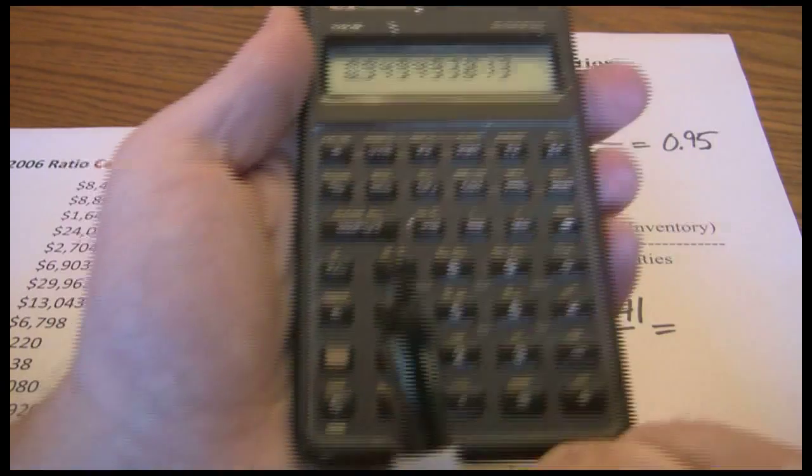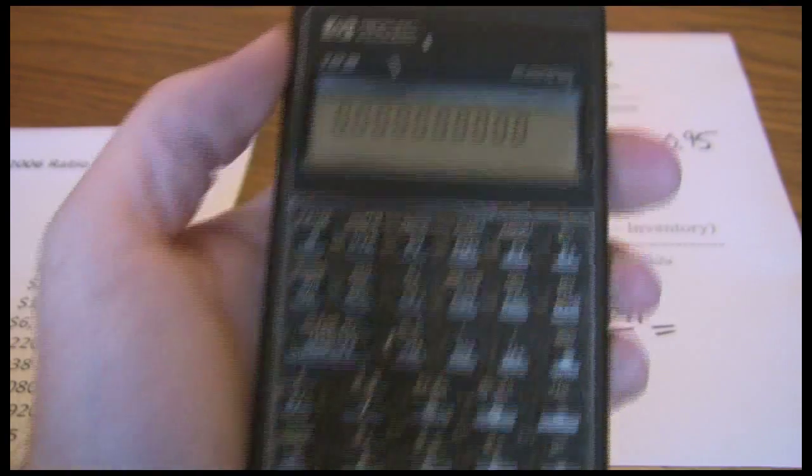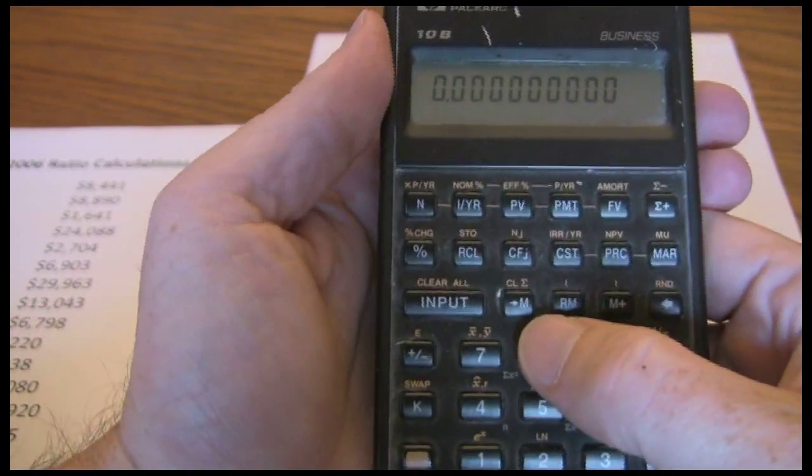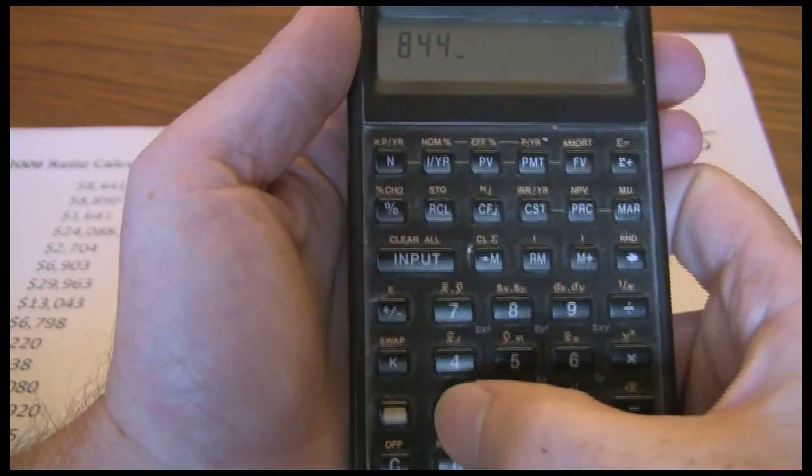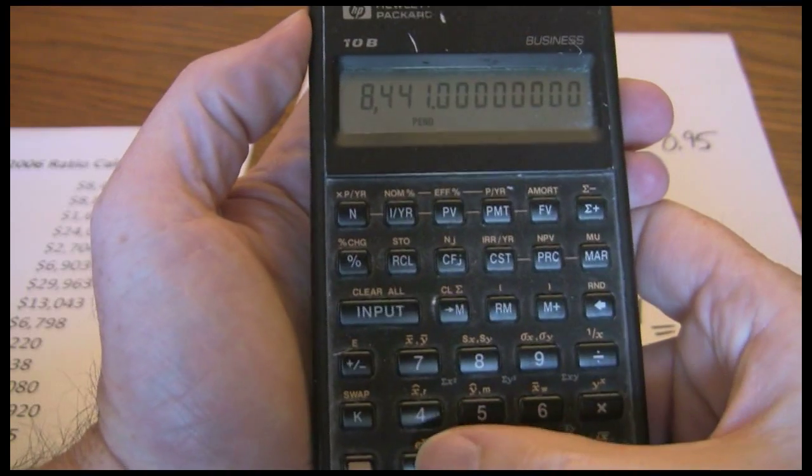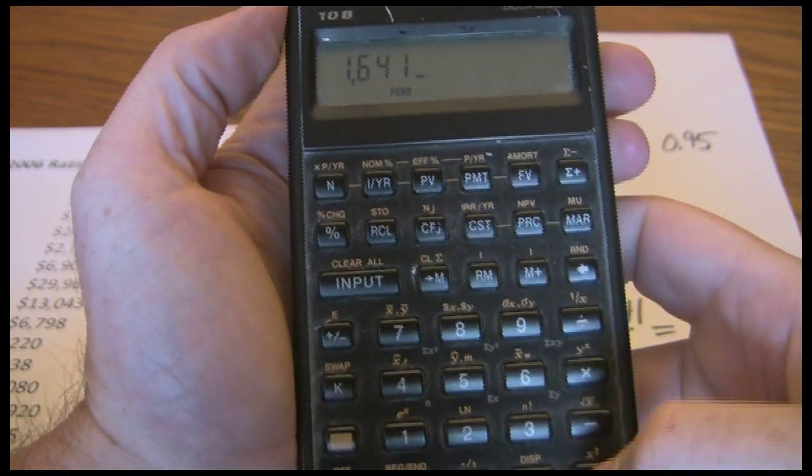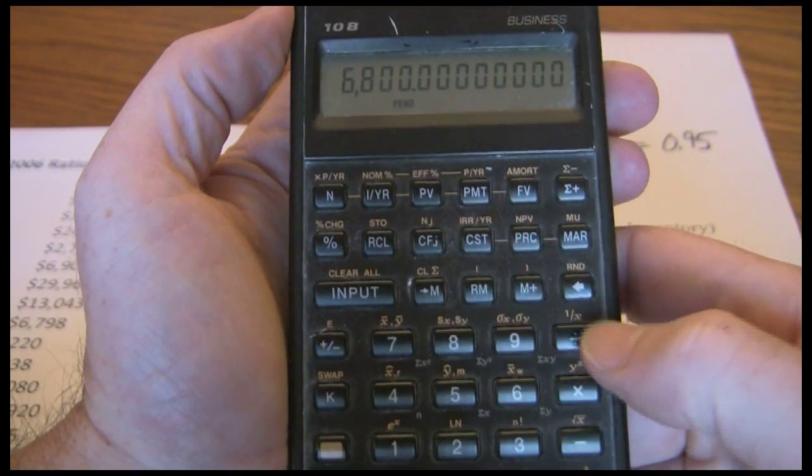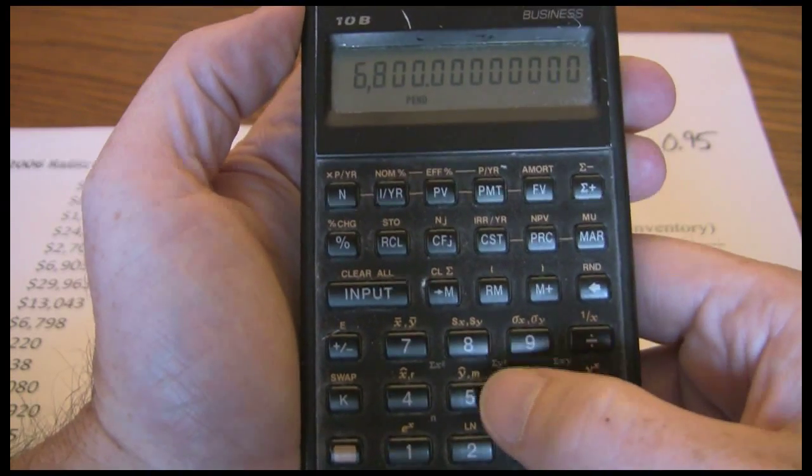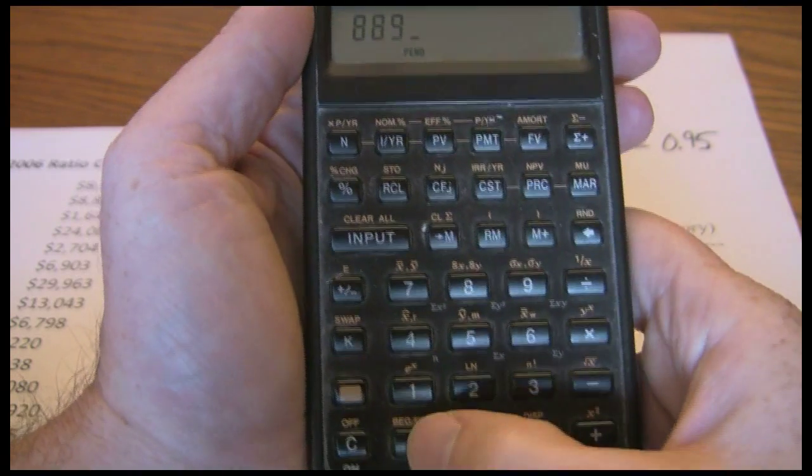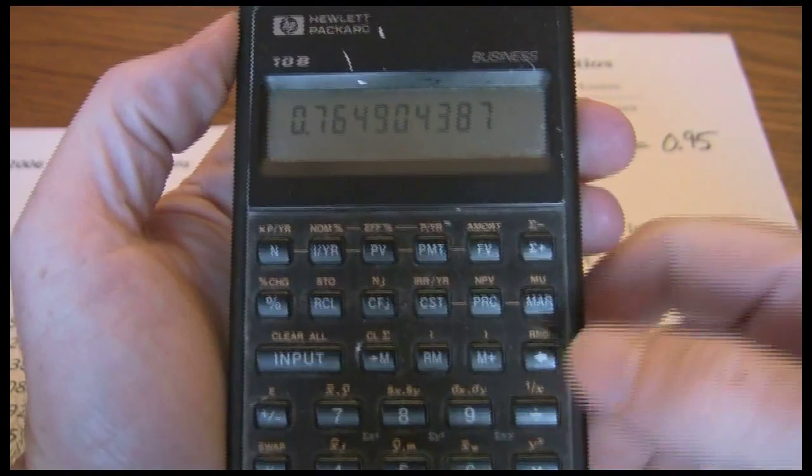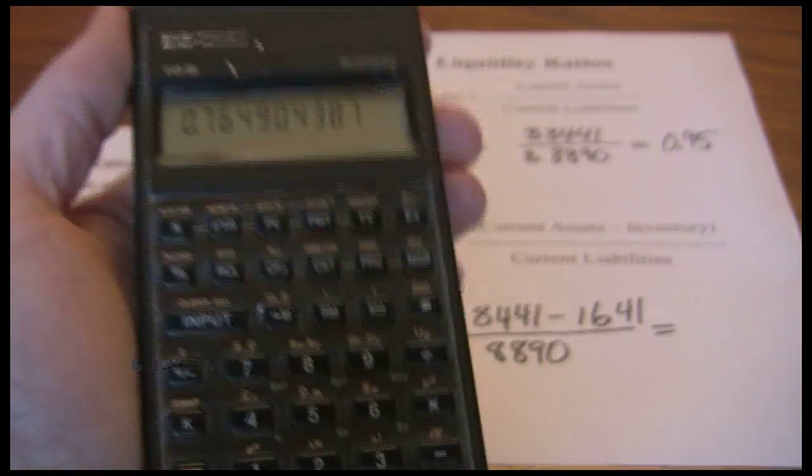Going to our calculator, we have $8,441 minus $1,641, divided by current liabilities $8,890, and we get a quick ratio of 0.76.